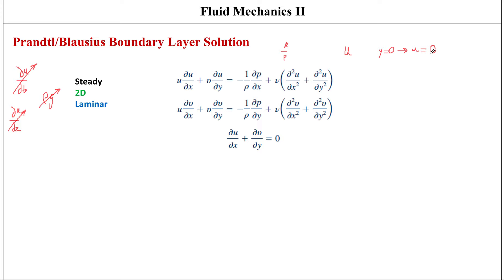No one has been able to obtain an analytical solution to these equations for flow past any kind of body — it's a very difficult problem. That is where boundary layer concepts come in. Prandtl was able to impose approximations valid for large Reynolds number flows to simplify the governing equations, and his student Blasius was able to solve the simplified equations for boundary layer flow past a flat plate parallel to the flow.